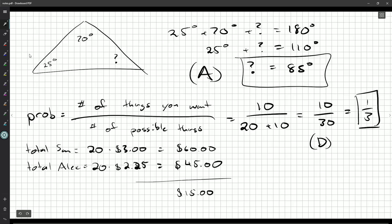Another way to do it is to ask, each bus trip, how much is Alex saving versus Sam? Per bus trip, $0.75 is being saved,